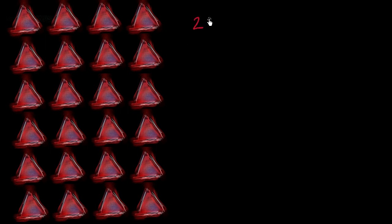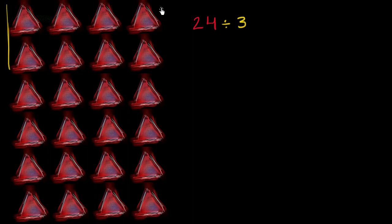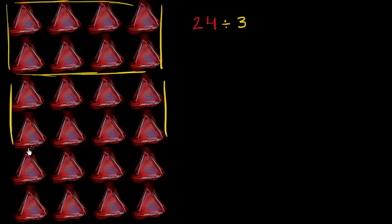We've got 24 triangle things right over here. What I want to do in this video is to divide it into different numbers of groups. So the first thing I want to do is divide these 24 triangle things into three groups and think about how many do I end up per group. So I'm going to divide it into three equal groups — that is one equal group, then another equal group, and then a third equal group.